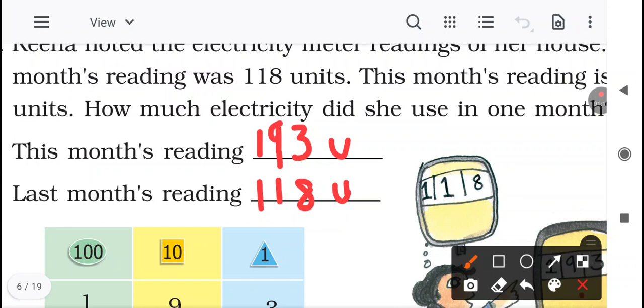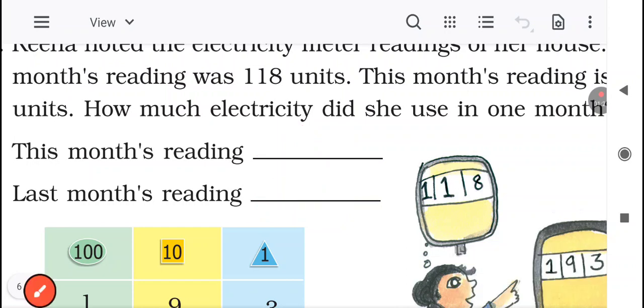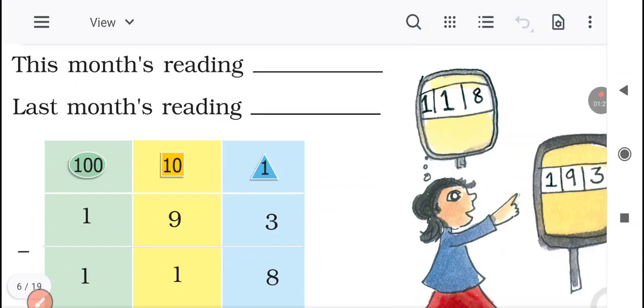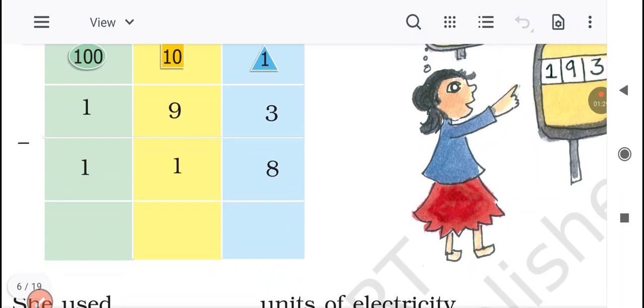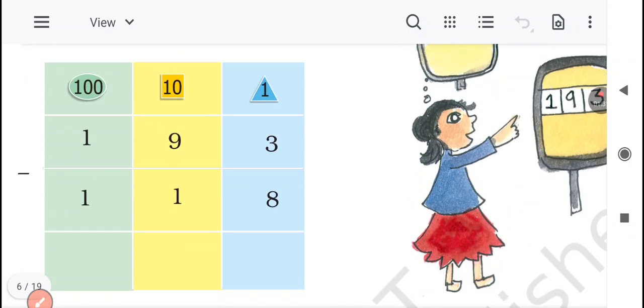Now let's move further. So what she wanted to find out is how much electricity did she use in one month? One month mein kitna electricity used kiya hai? To find that, what do we need to do? We need to subtract, right? Big number se hame smaller number subtract karna hoga. So 193 minus 118.